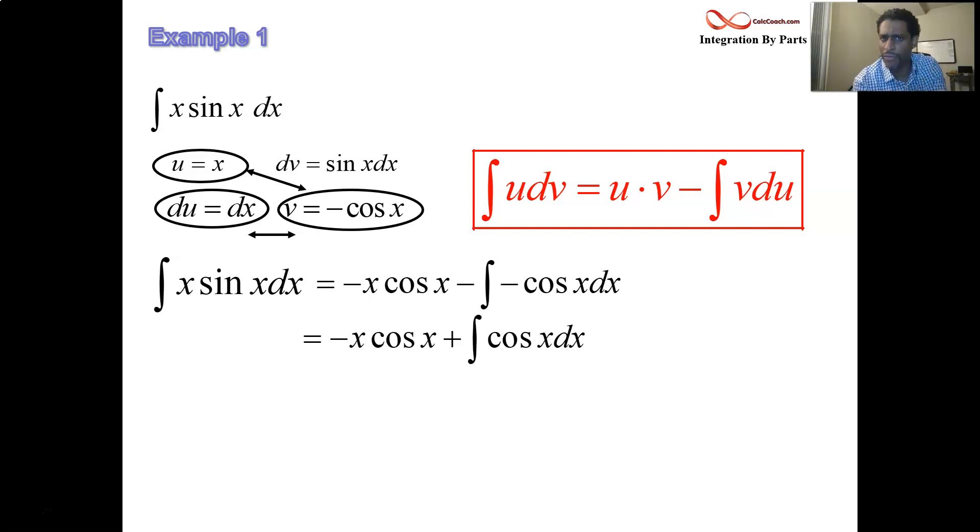The integral of cosine x. We know what function has cosine x as its derivative, sine x. This is it. We have exactly the antiderivative. If we were to take the derivative of negative x cosine x plus sine x plus c, we should end up with x sine x.